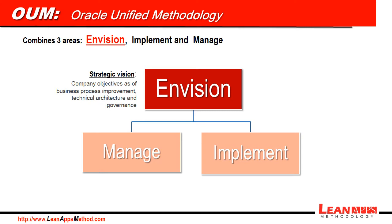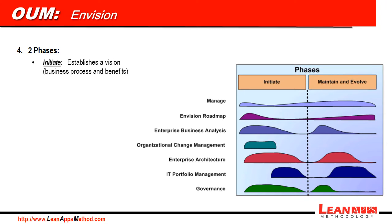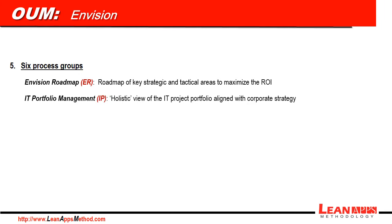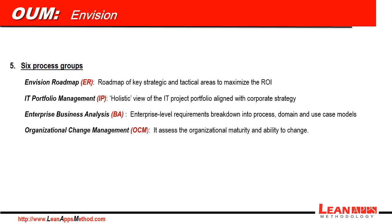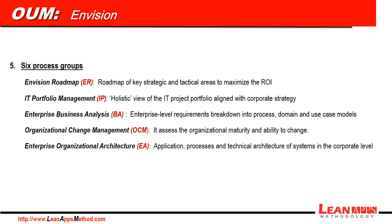This is done through two different phases. The first one is Initiate, where a vision is established and business processes and benefits are defined. The second one is Maintain and Evolve, which means developing this vision throughout the many projects that will happen. InVision has six different process groups: InVision Roadmap, IT Portfolio Management, Enterprise Business Analysis, Organizational Change Management, Enterprise Organizational Architecture, and IT Governance. If you want to understand each of those processes in detail, I strongly advise you to watch the long version of this OUM InVision video.